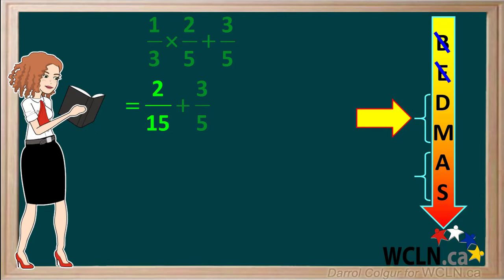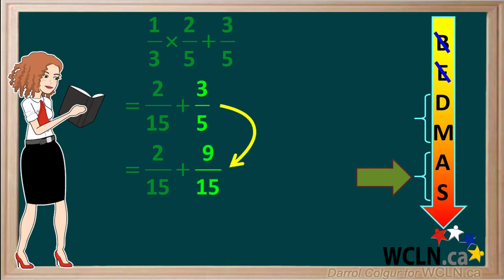There are no more multiplications or divisions, so we move down to addition and subtraction. We have the fractions two-fifteenths and three-fifths to add together. In order to add fractions, they must have the same denominator. Three-fifths can be converted to fifteenths by multiplying both the three and the five by three. So we're left with nine-fifteenths. Adding two-fifteenths and nine-fifteenths gives us eleven-fifteenths. This fraction cannot be simplified, so this is the final answer to this question.